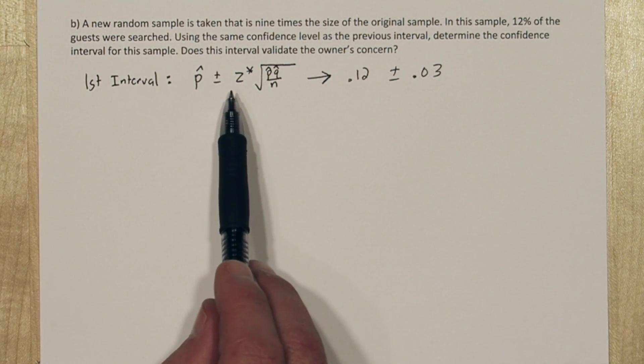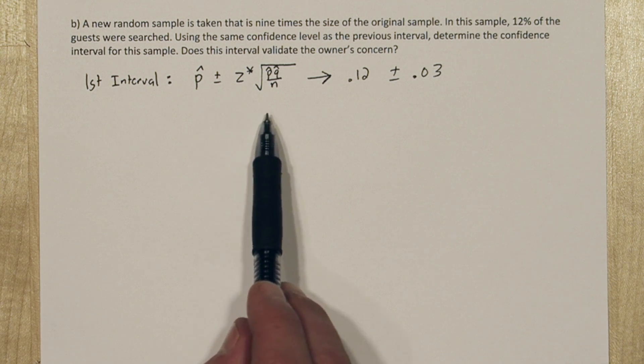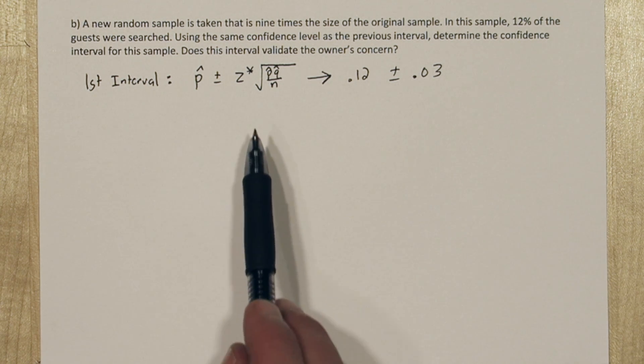So even though we don't know the values of z star and n, we know this entire quantity is 0.03.